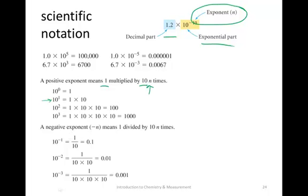10 to the 1st power means you're multiplying your integer by 10. 10 to the 3rd says that you should multiply your decimal part by 10 three times. So, 1 times 10 times 10 times 10 is 1,000 or 10 to the 3rd.